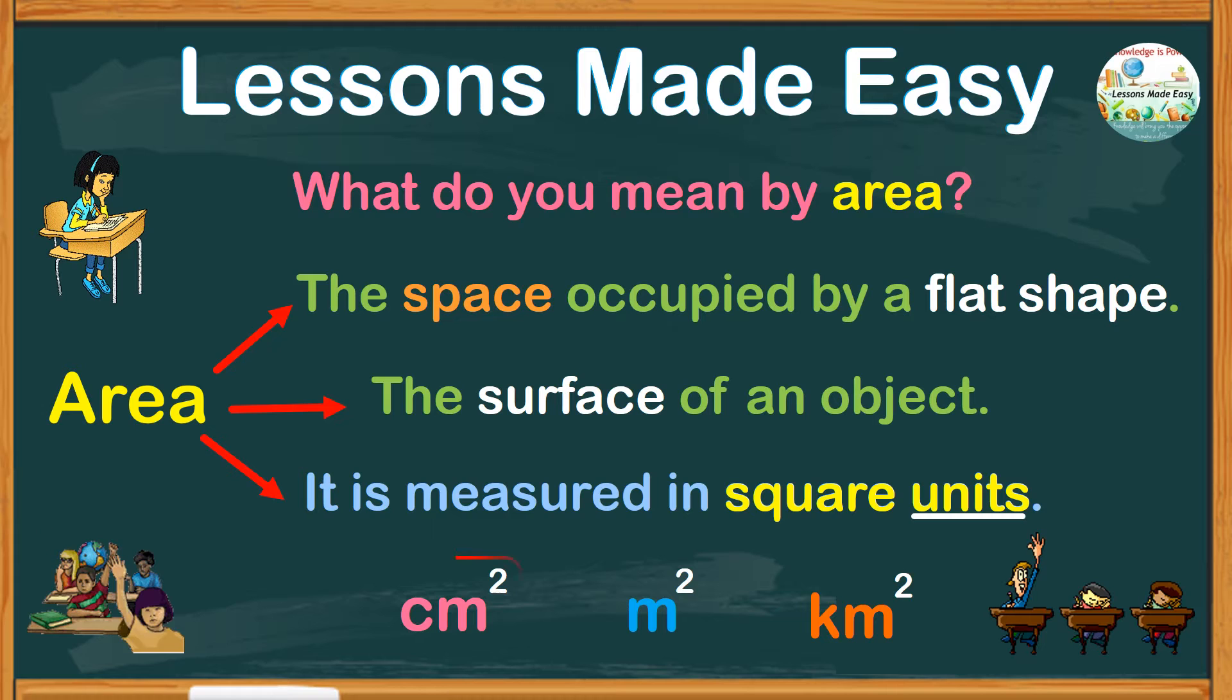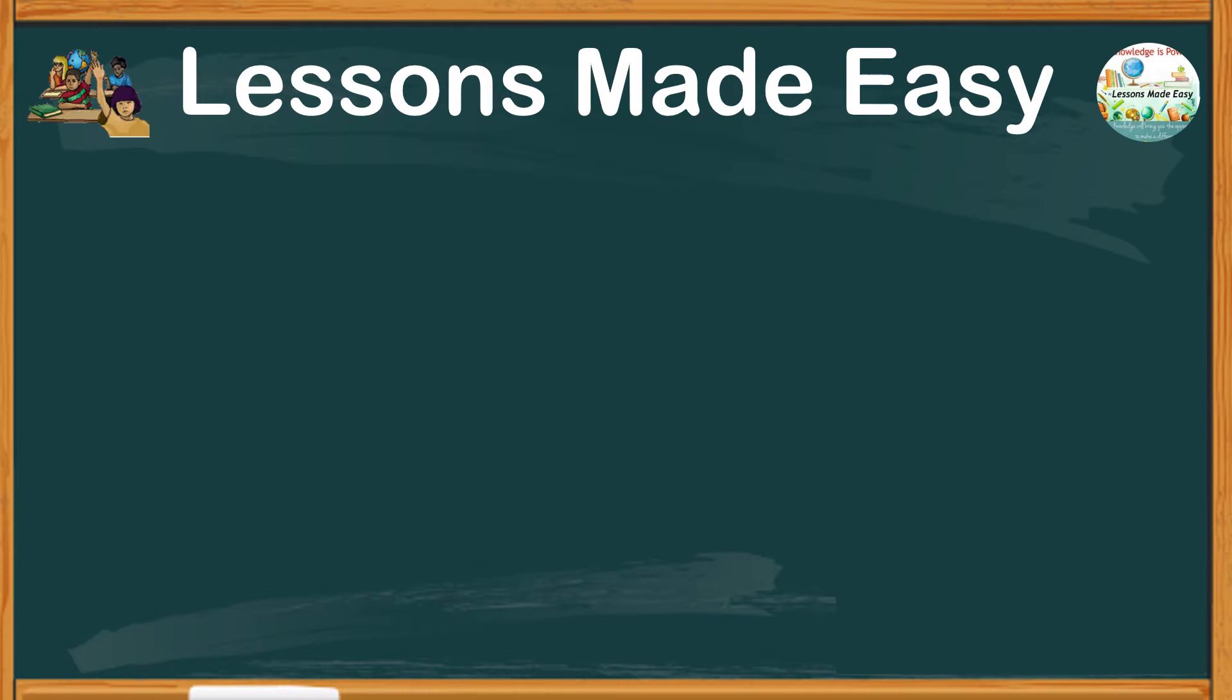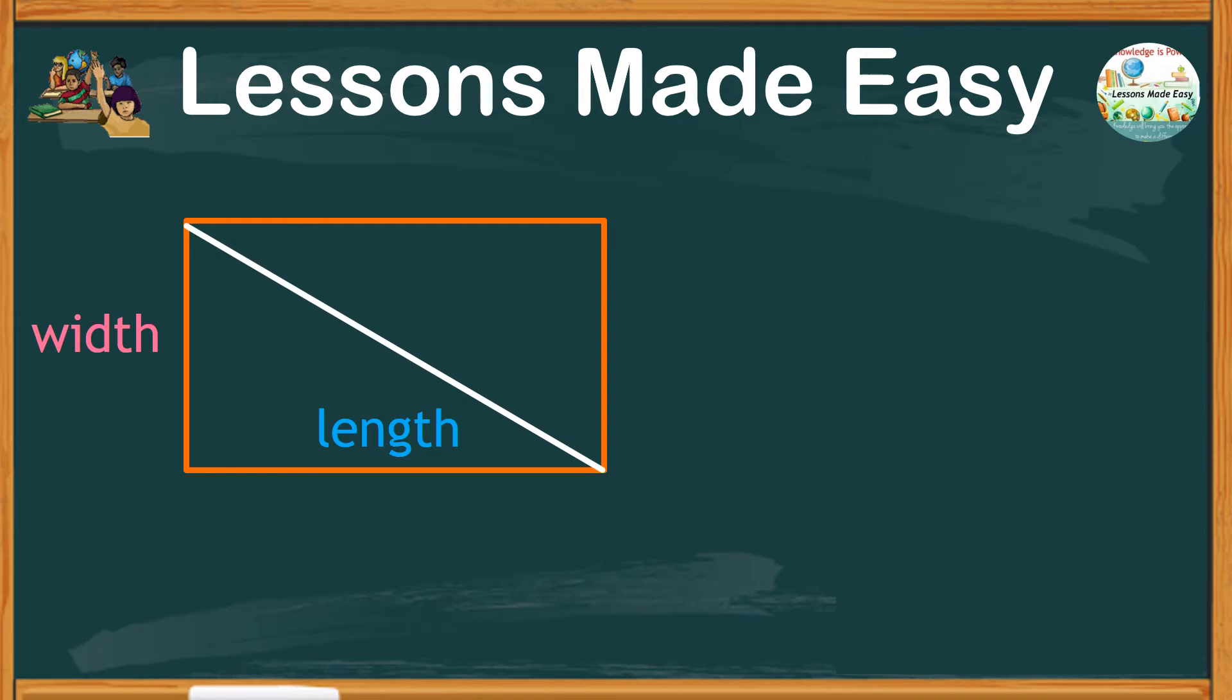When we say square units, this means they are being used twice, that's why you see the exponent 2. This can be read as square centimeters, square meters, and square kilometers. In our previous lesson, we said to find the area of a rectangle we simply take the measurement of the length multiplied by the width. But what happens if a diagonal line is drawn from one corner to another corner of this rectangle? What is being formed?